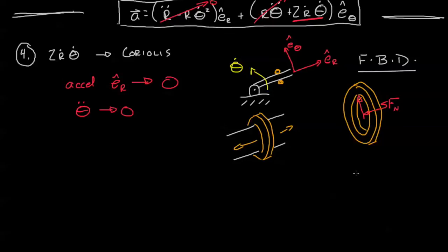So in other words, if we resume our next step of writing the sum of the forces equals mass times acceleration, we see that whatever that normal force is must be equal to the mass times just this component of the acceleration, which is 2 r dot theta dot e theta.